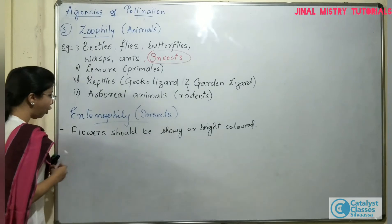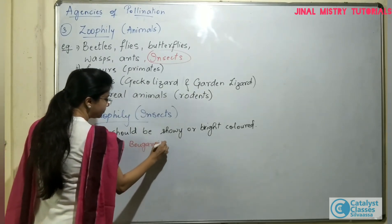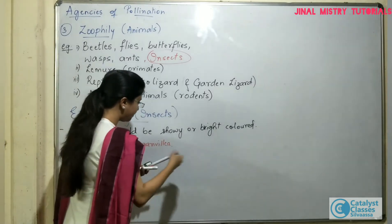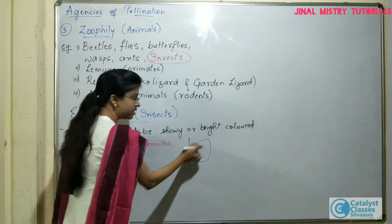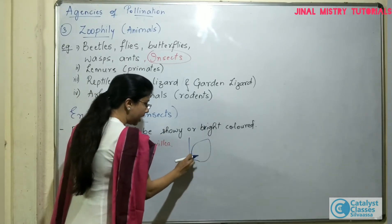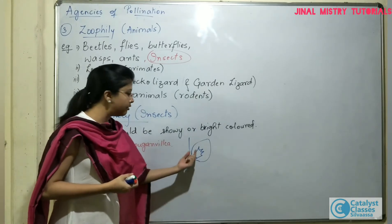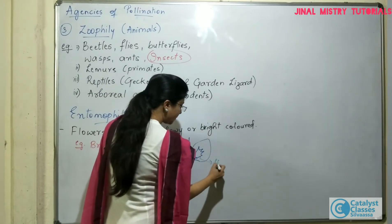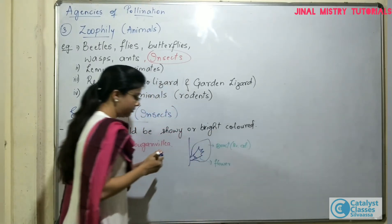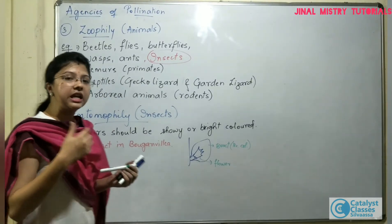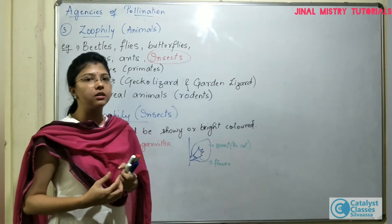For example, consider the bract in bougainvillea. In the case of bougainvillea, the bract has a very bright color. The bract is a small reduced part of the leaf attached to the stem; the bract is enlarged, and on it is arranged a dull colored or faded flower. So in bougainvillea, the bract will be brightly colored. If the flower is not showy, then any other part should be brightly colored — there can be leaves or even the stem — which can play a role in attracting insects for pollination.